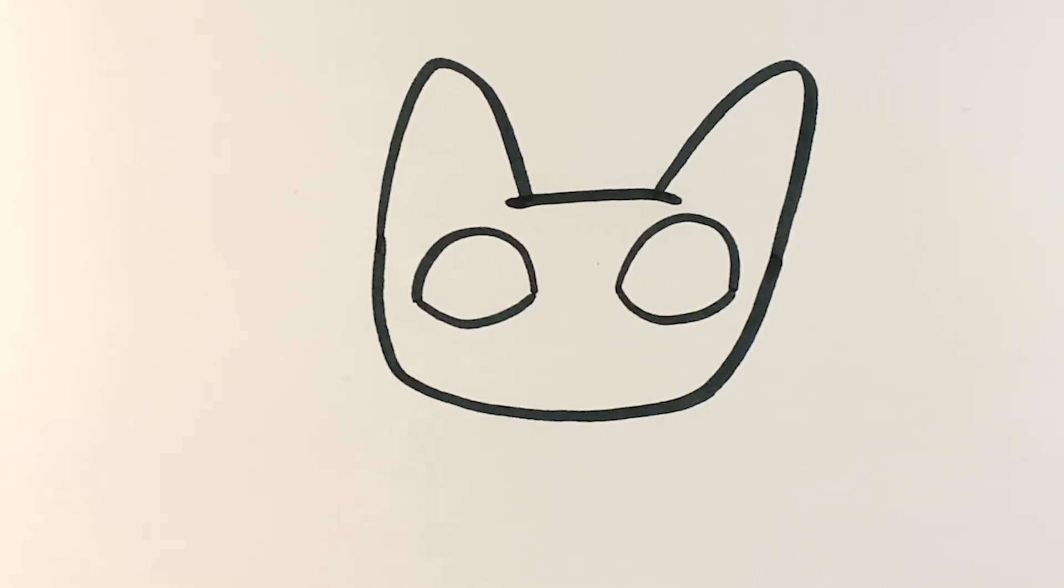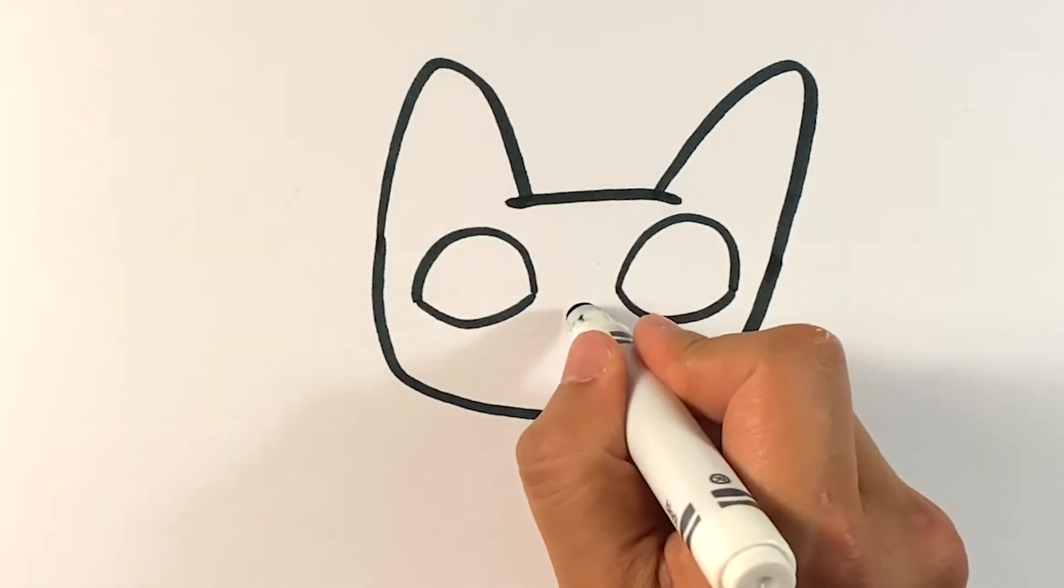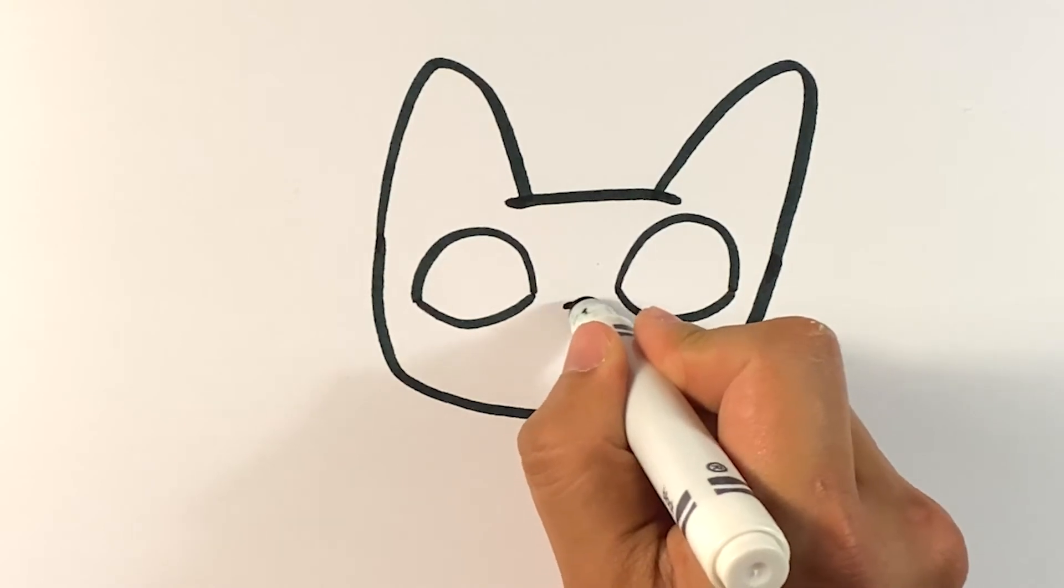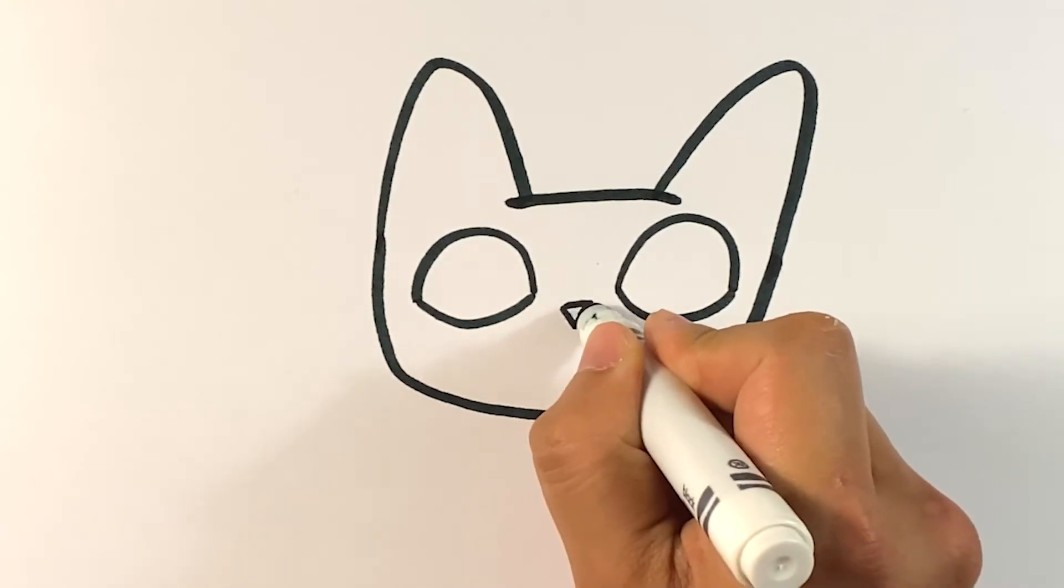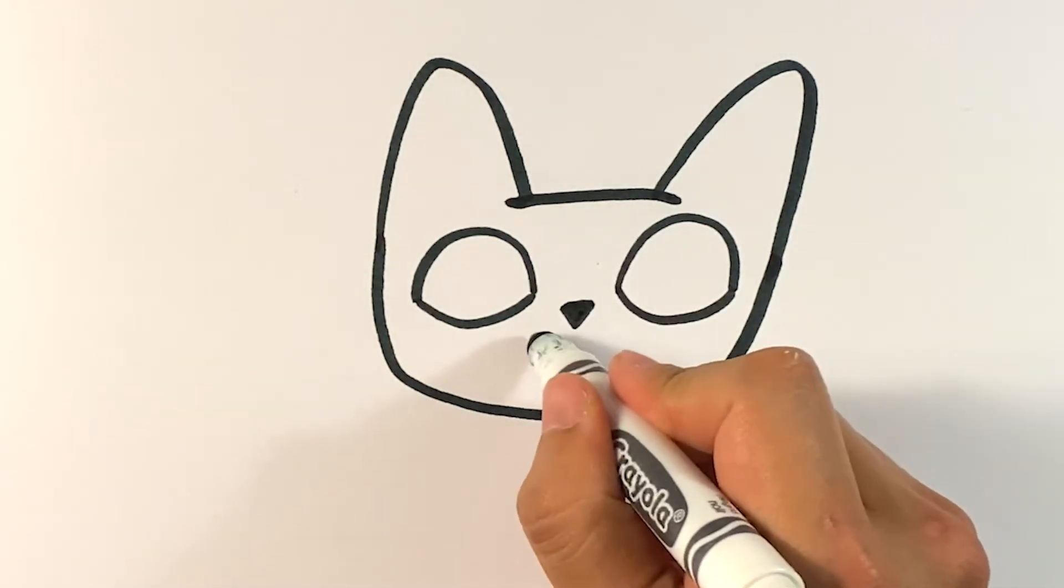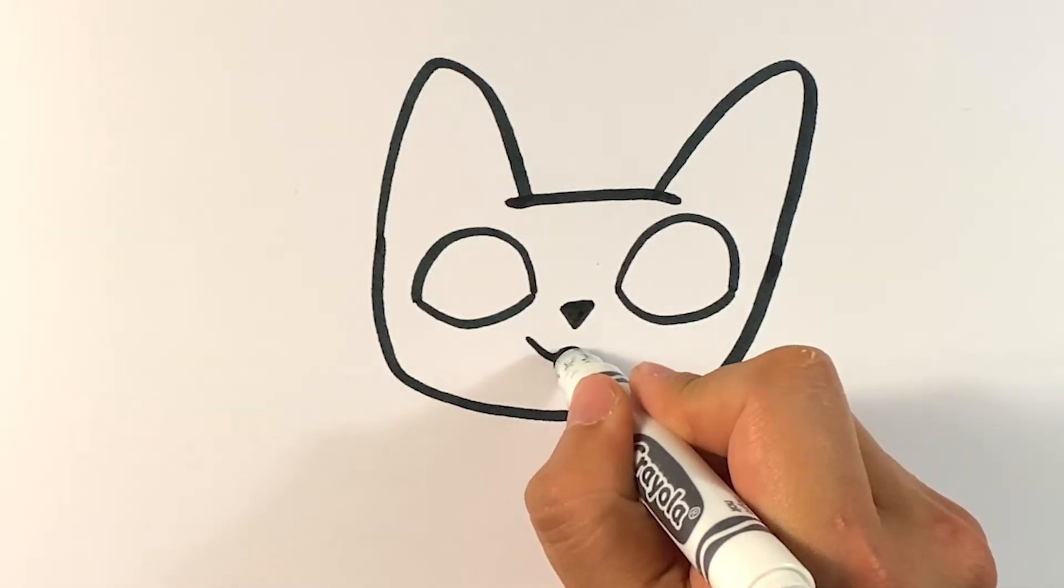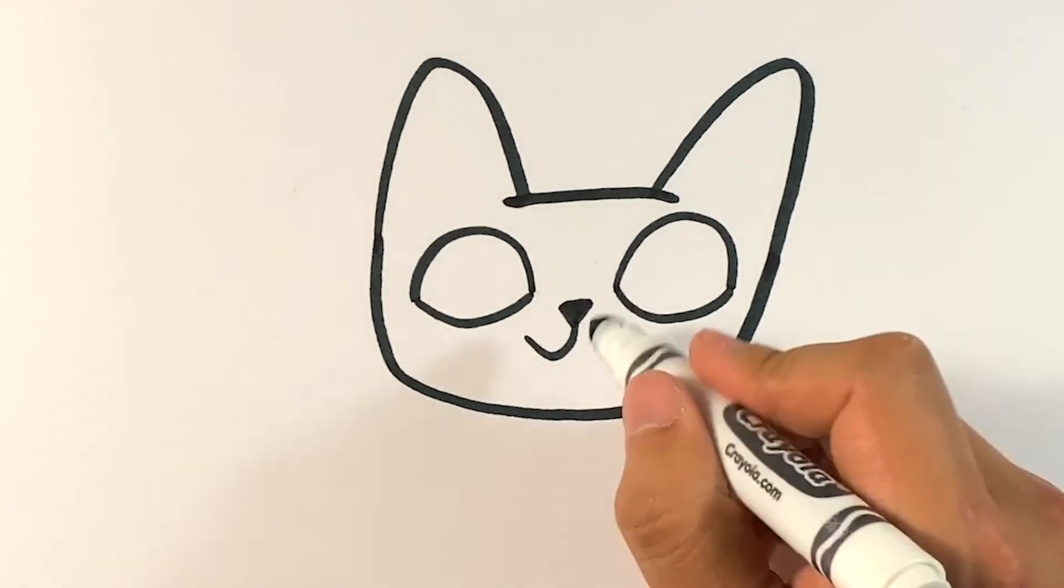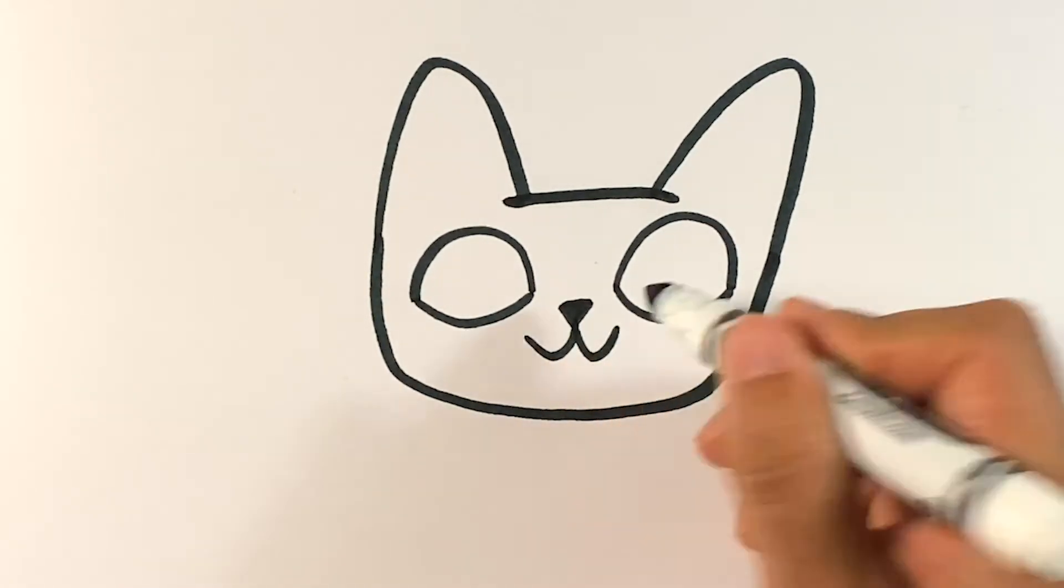And over here draw the bottom side. Cat eyes are open. Tiny nose in the middle, it's basically an upside down triangle. Make it tiny and close to the face, this sort of makes it look really cute. Go over here to the mouth. One side, go over here to the other side.